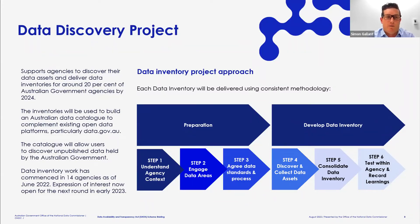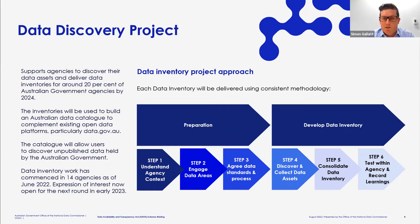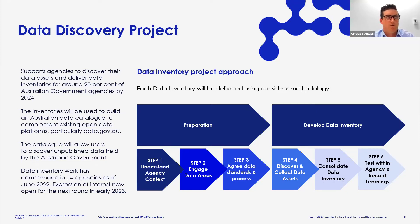The Discovery Project is how we're delivering these data inventories. We're looking at up to 20% of Australian government agencies by 2024 — that's about 45 agencies over the next couple of years. We're working with 14 as of the end of June and looking at something like 25 by the end of this year. Each inventory is delivered using the same set of steps: we understand the agency context, engage with multiple data areas in that agency, agree on standards and processes, collect the assets, consolidate the inventory, and present it back to the agency — with the end goal of the inventory being available through the Australian data catalogue.